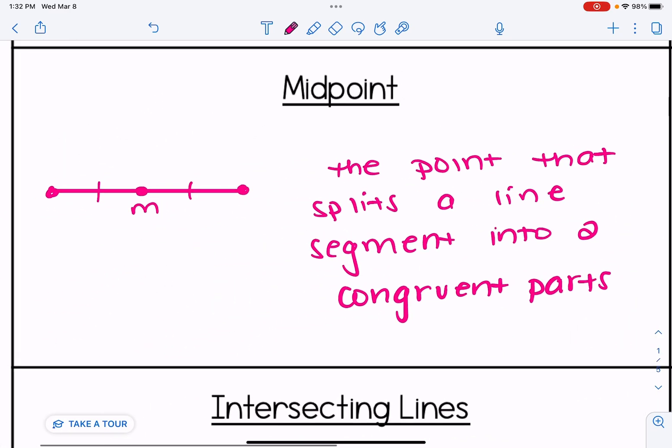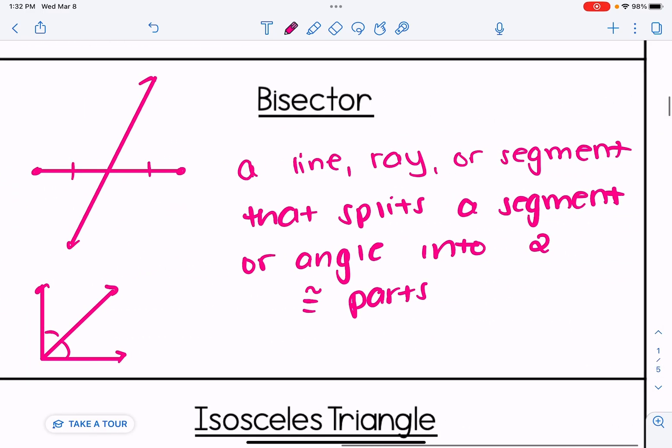A midpoint is the point that splits a line segment into two congruent parts. A bisector is a line, ray, or segment that splits a segment or angle into two congruent parts. So there could be a segment bisector or an angle bisector. My first diagram here is a segment bisector because it is cutting a segment into two congruent parts, whereas in the second picture we have an angle bisector because the angle is being cut into two congruent parts.